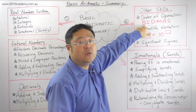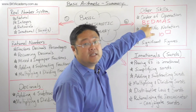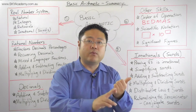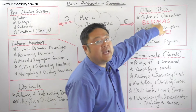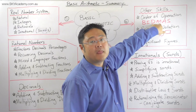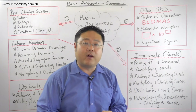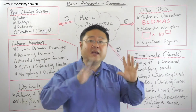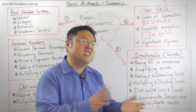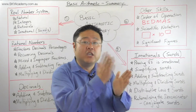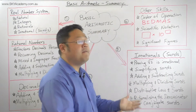In BIDMAS: B stands for brackets — do them first, working from the inside out or left to right. Then do indices, which includes square roots, squares, cubes, and any power. Next, do division and multiplication in the order you encounter them from left to right — not one before the other. Finally, do any remaining addition and subtraction operations from left to right in the order they appear.